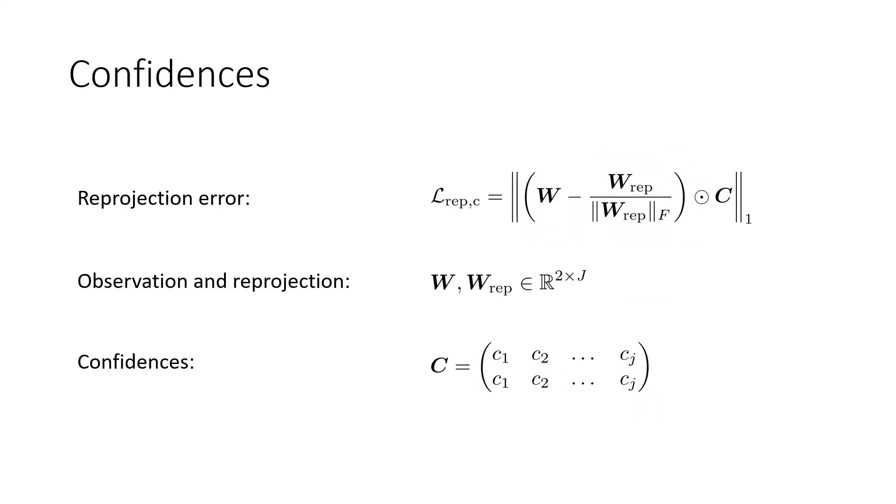We achieve further improvement by integrating joint confidences given by the 2D pose estimator. Given a standard L1 reprojection loss, we simply multiply each entry by the respective joint confidence. During training, this helps to focus more on joints that are detected with high confidence.